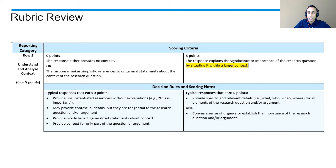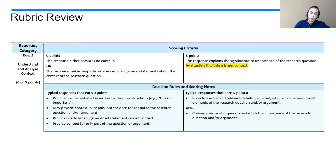Before moving into the actual content, I want to focus on the second Rubric Rule, which is really about understanding and analyzing context. This rubric is broken into two separate categories: on the left-hand column, zero points; on the right-hand column, five points. This is another example of either you get the points or you don't.